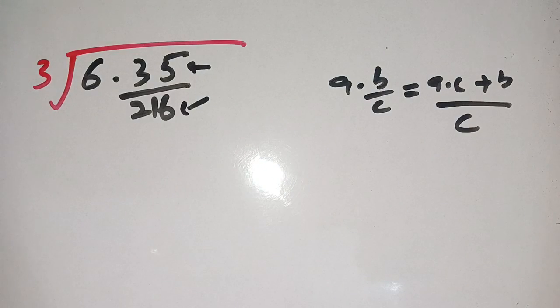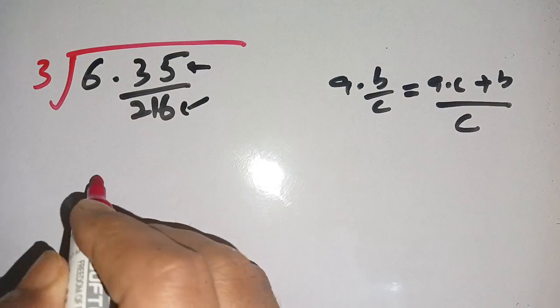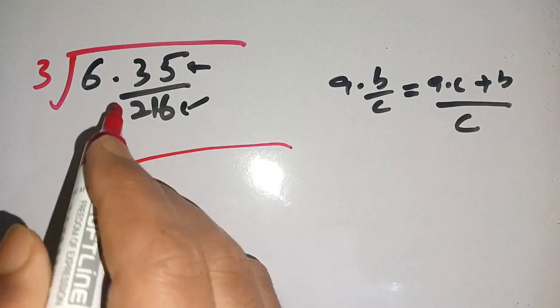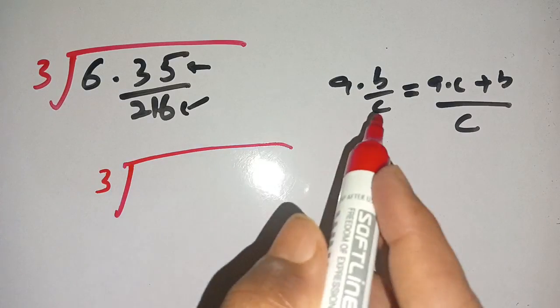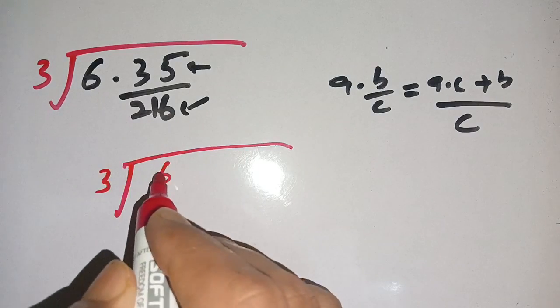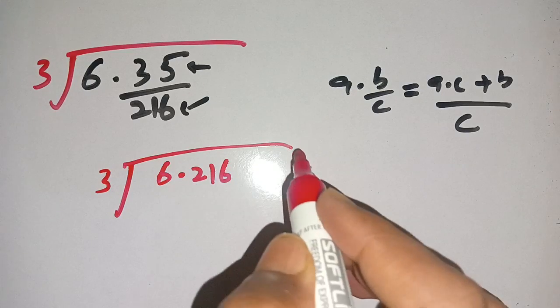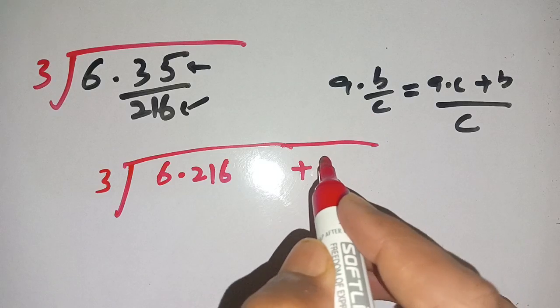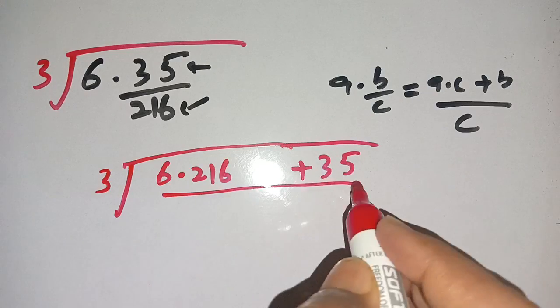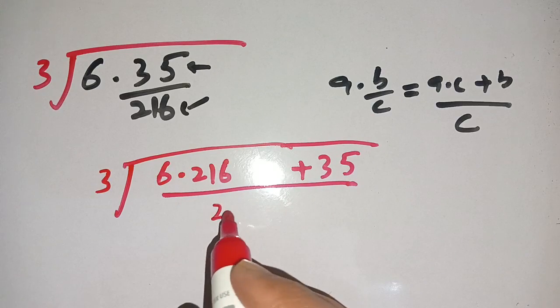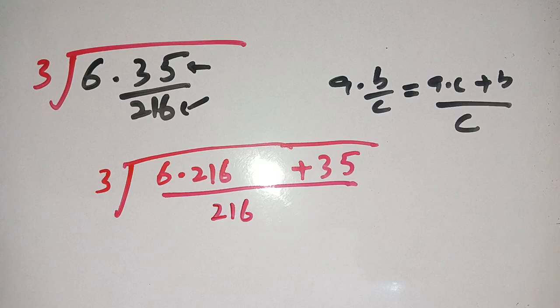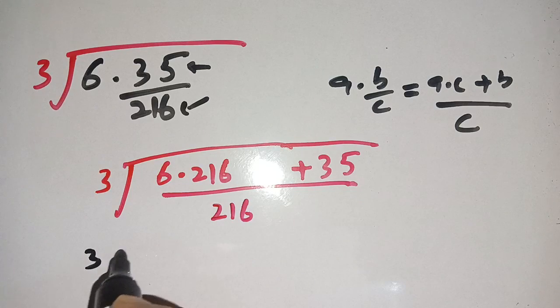On applying this formula we get cube root of a times c, that's 6 times 216, plus b, which is 35, divided by c, which is 216. On the next step we get cube root of 6 times 216, which becomes 1296, plus 35, divided by 216.